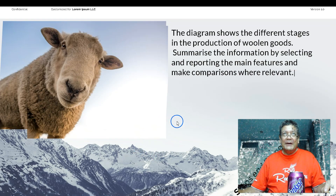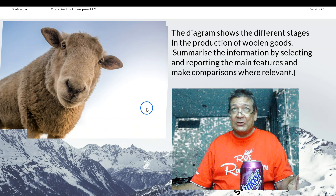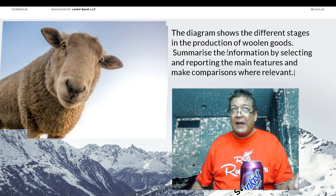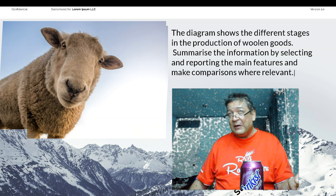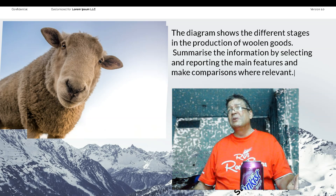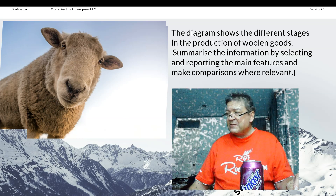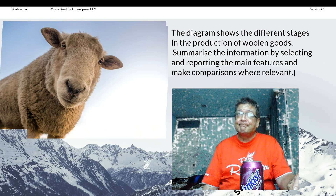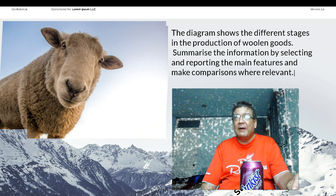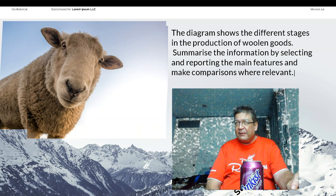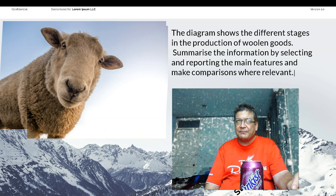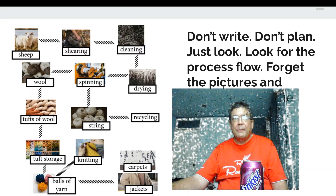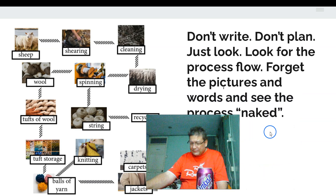This diagram is going to show us the different stages in the production of woolen goods. I admire our candidate already — he or she has included the key instructions in every task: one, summarize the information, meaning describe the most important information in as few words as possible; two, select and report the main features — not any features, but the main features; and make comparisons.